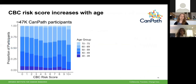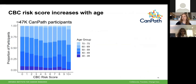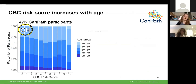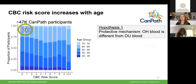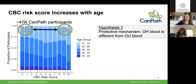If we look at the CBC risk score across CAMPATH participants — here I've plotted the CBC risk score on the x-axis and the proportion of participants in each score bin on the y-axis, colored by age group — the individuals I'm most interested in studying are the oldest individuals in the cohort with the lowest CBC risk scores. We refer to these as old healthy individuals. We have one hypothesis that there might be a protective mechanism keeping their blood healthy, meaning that their blood is simply different from that of individuals we consider unhealthy. To test this hypothesis we need to compare these individuals to older individuals with unhealthy blood.